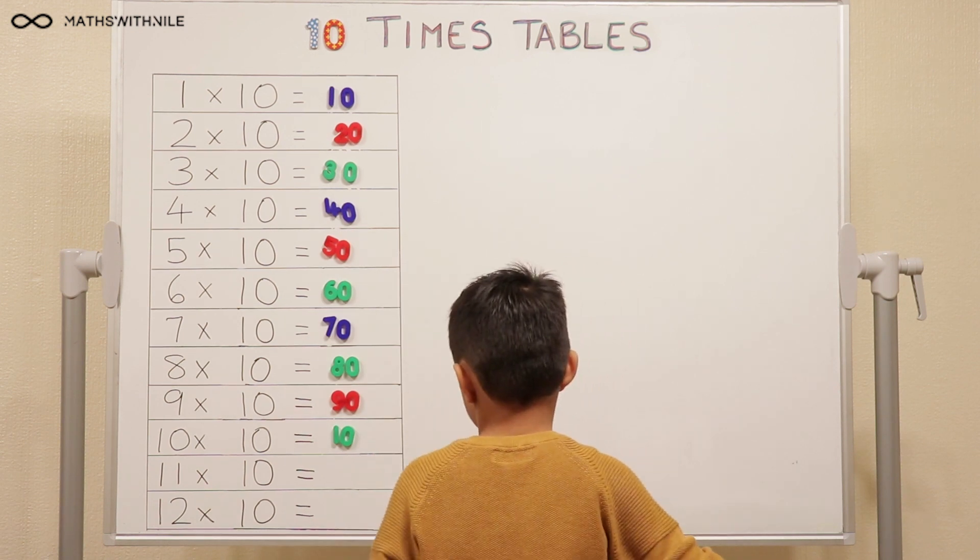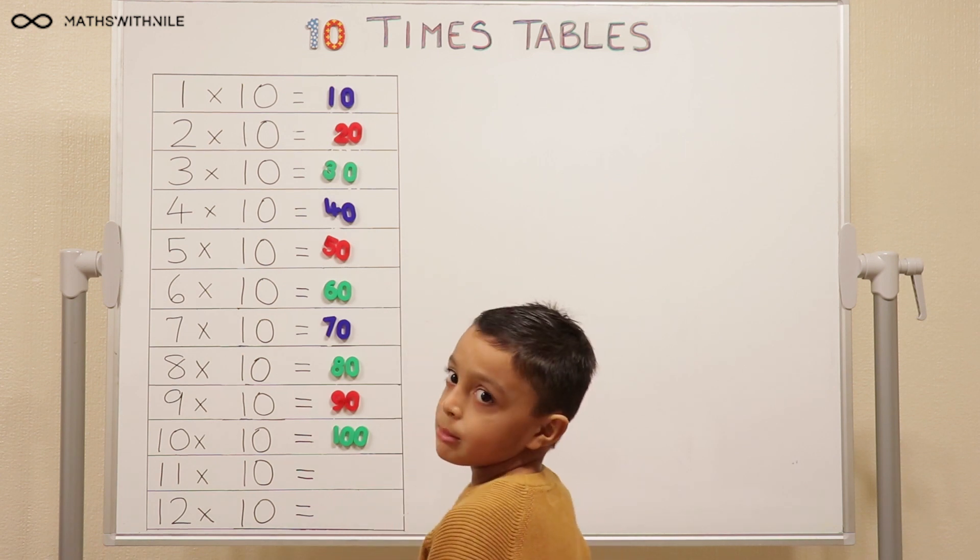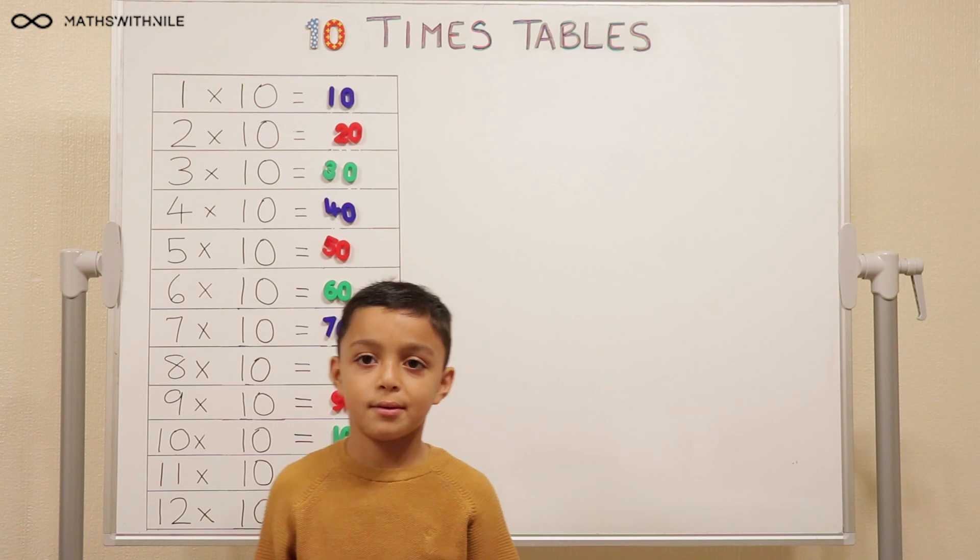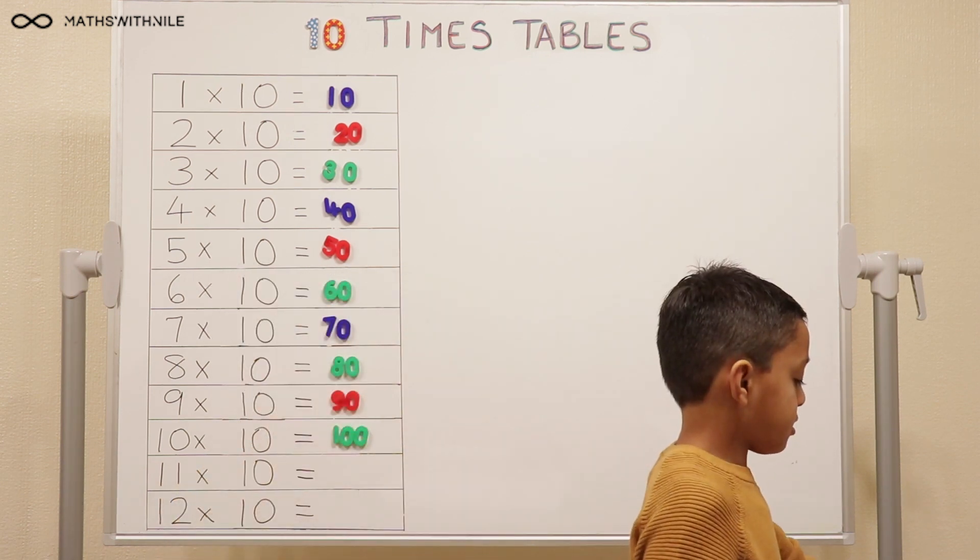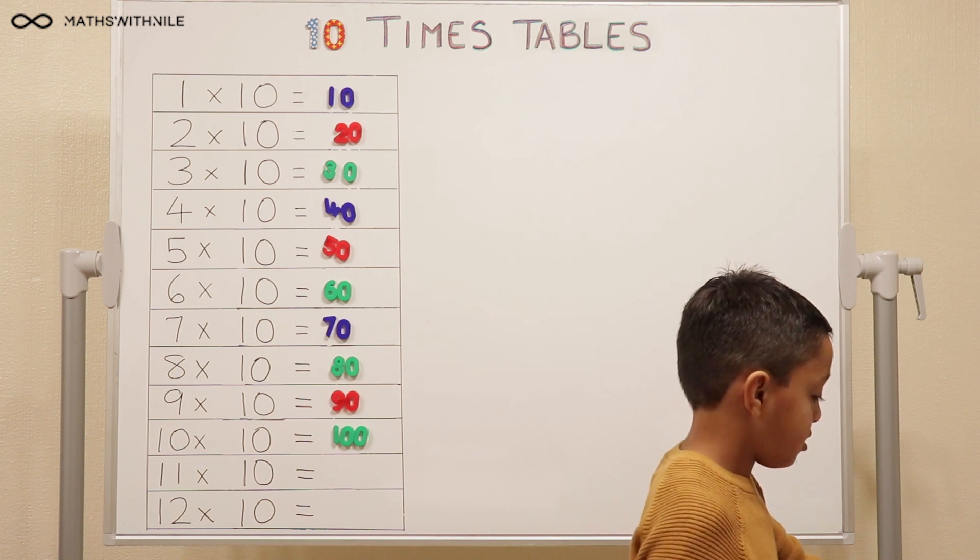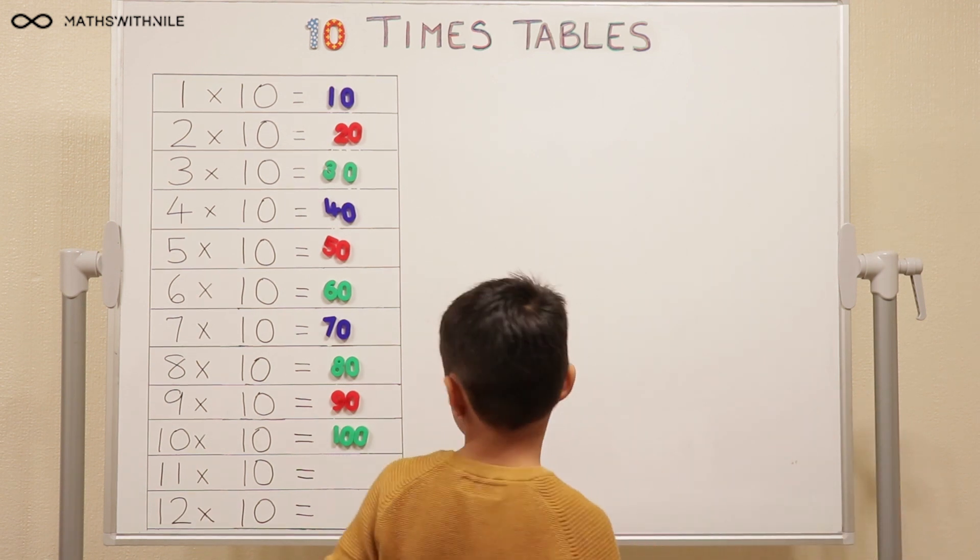So 10 times 10 equals 100. Now how many lots do you have in the next question? How many lots of 10? 11 times 10. Do you have 11 fingers? No. So can we just use the counters for this? Okay. I'm just going to put down 11 counters and then we're going to count them after.